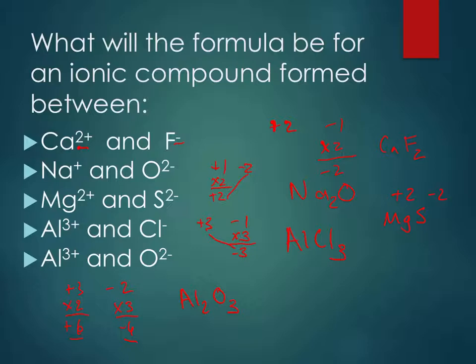Now, this was mathy. There's actually a cheat way to do this. What you could do is you can take the value of the charge, so you just take the number, not the plus or minus, and draw it over to the other one. So that there, Ca, 1 from the F, and then F2 from the 2 of the calcium.